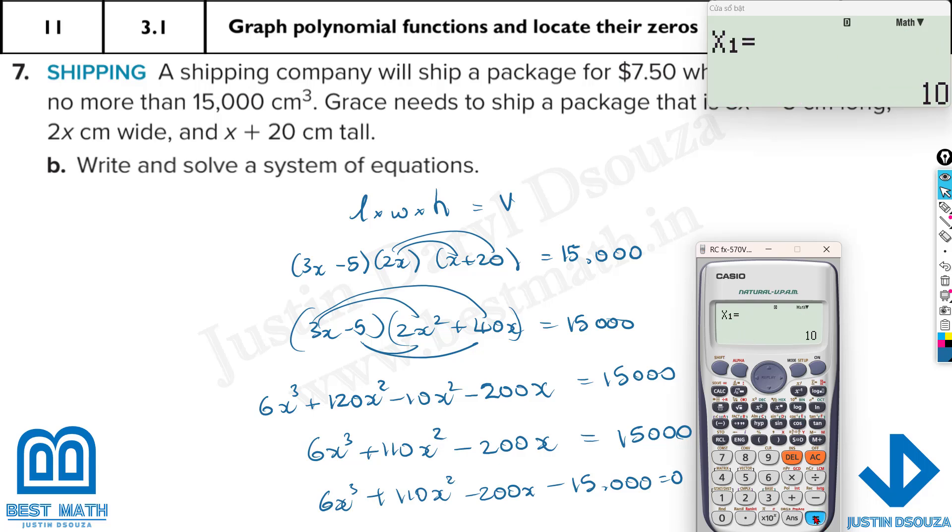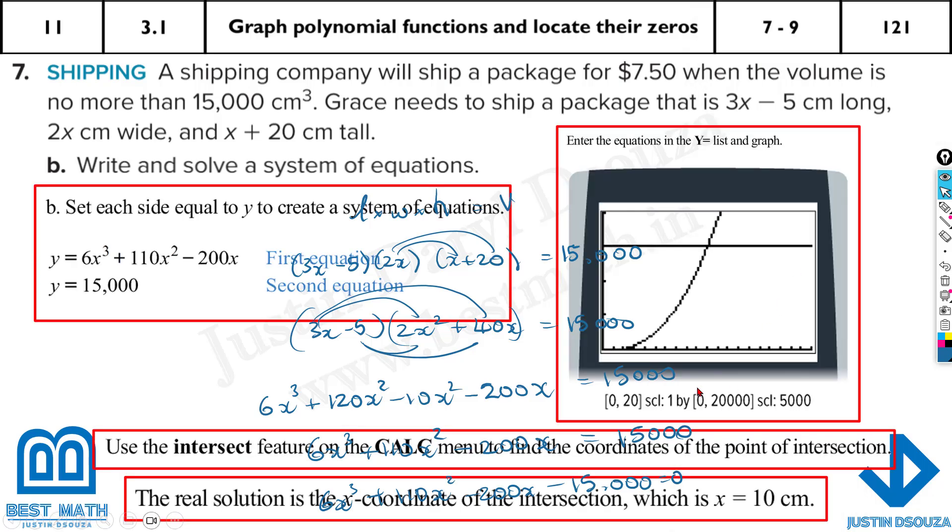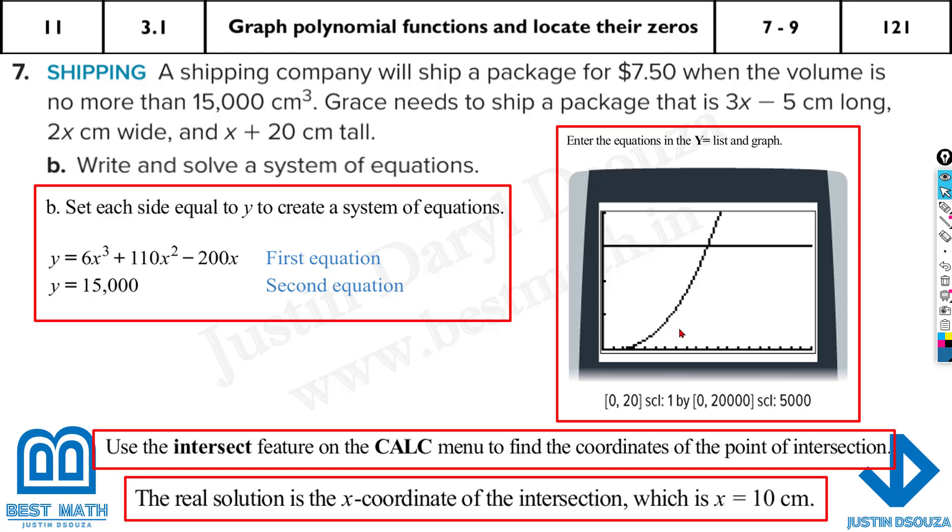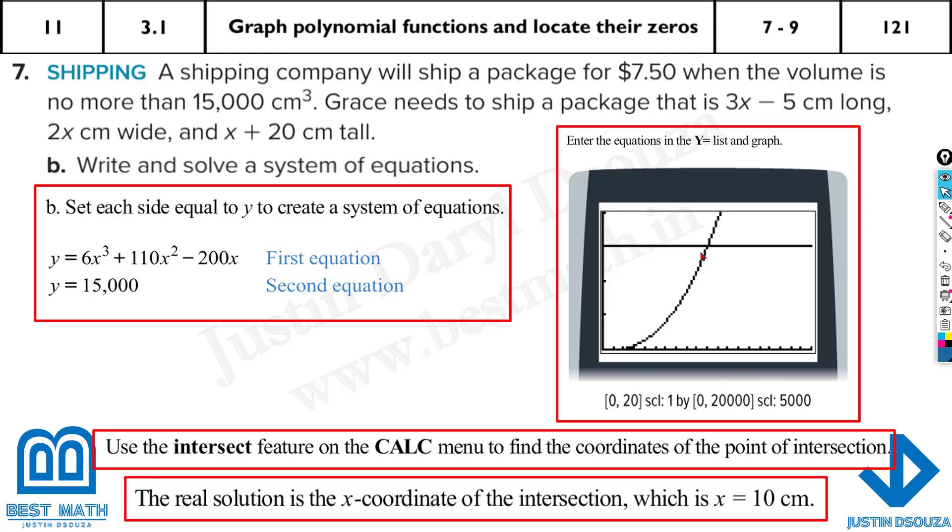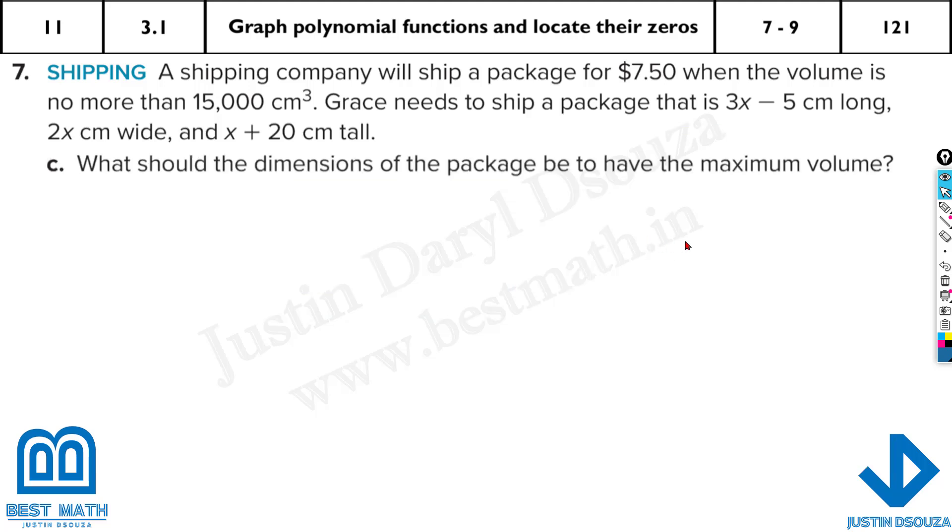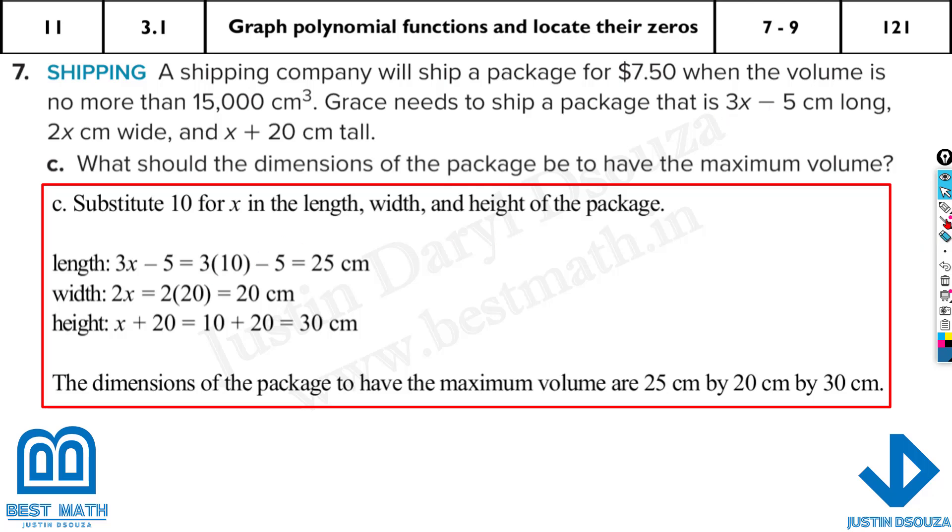Now we are having it in the form as mentioned. So these are the values we need to type in. Let me type it in: 6, 110, minus 200, and lastly minus 15,000. So the value, x can be 10, or there are imaginary numbers in conjugate. We need to ignore them. The only possible solution is 10. So x is 10. Now if you know x is 10, substitute it back. 3(10) - 5 = 25 centimeters long. 2(10) = 20 centimeters wide. And 10 + 20 = 30 centimeters tall. So these are the dimensions.